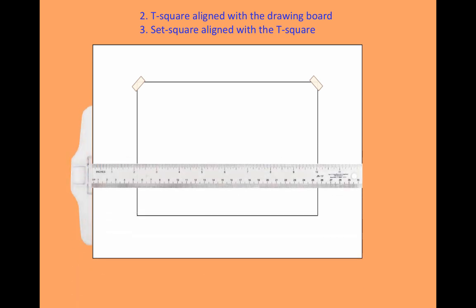Our T-square must always be flush against the side of the drawing board, and our set square is also flush against the blade of the T-square. This will assure us that 45-degree lines can be repeated again and again in relation to each other, rather than being arbitrary marks.